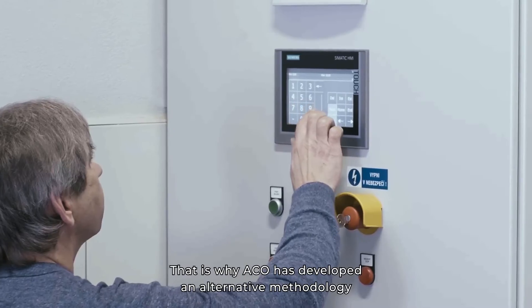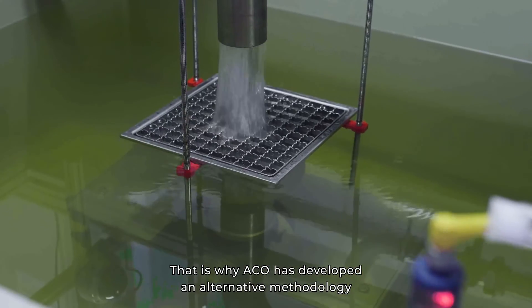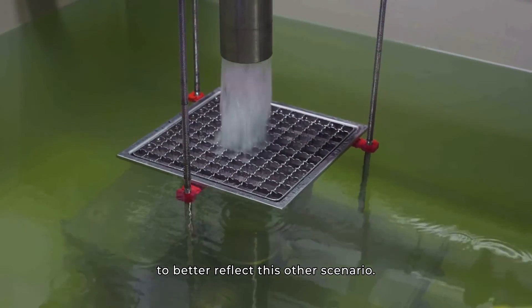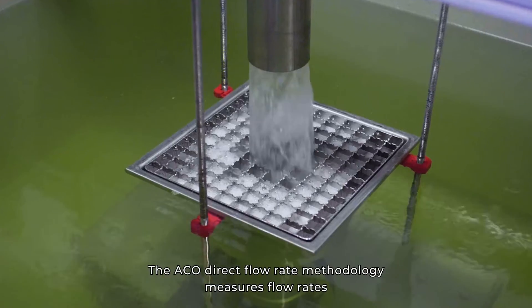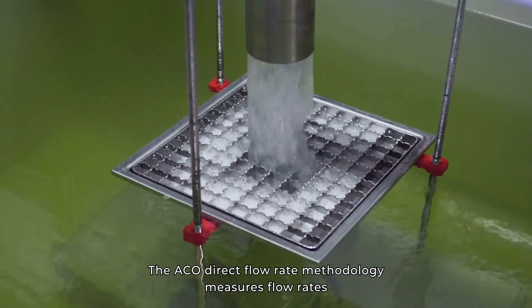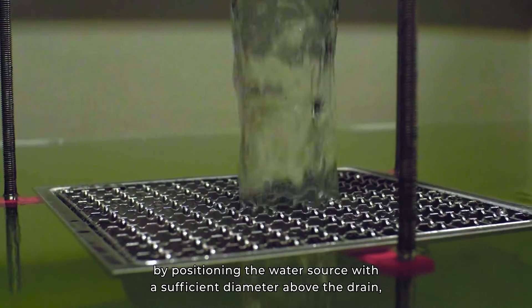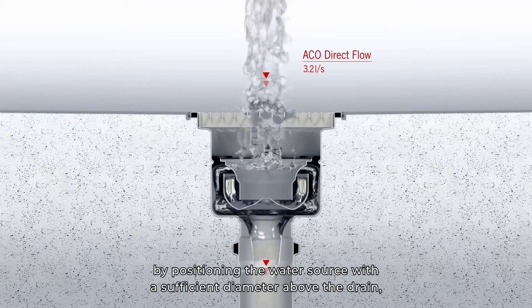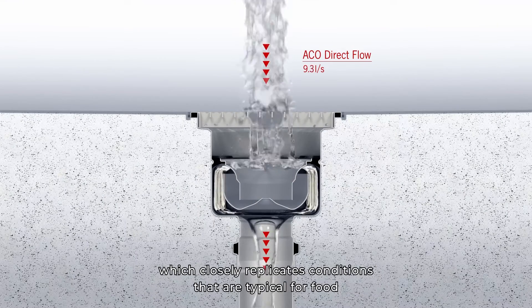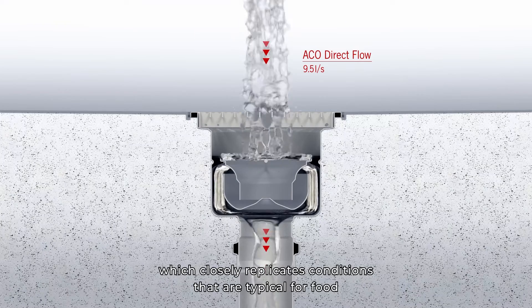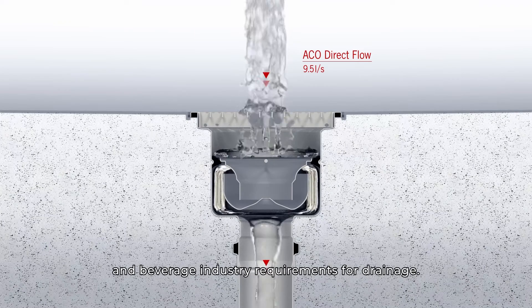That is why ACCO has developed an alternative methodology to better reflect this other scenario. The ACCO direct flow rate methodology measures flow rates by positioning the water source with a sufficient diameter above the drain, which closely replicates conditions that are typical for food and beverage industry requirements for drainage.